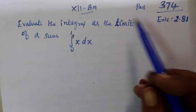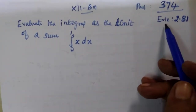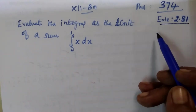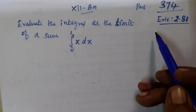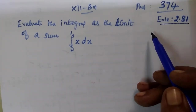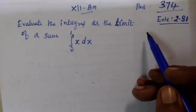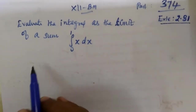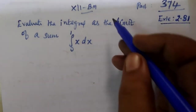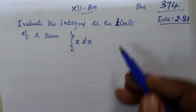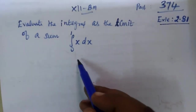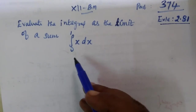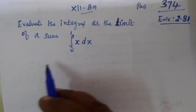Now for 12th business maths, example 2.81. We need to evaluate the integral as a limit of the sum. The integral is from 0 to 1 of x dx. It is a formula we will work through.